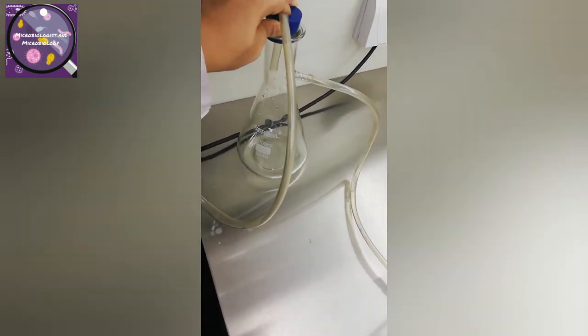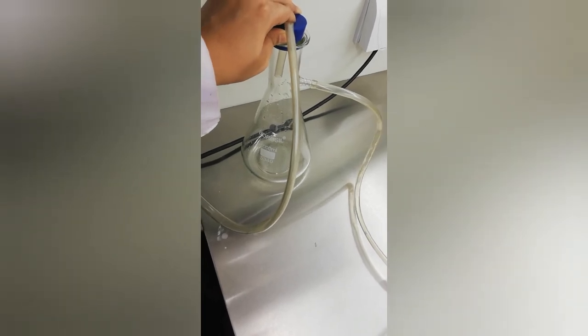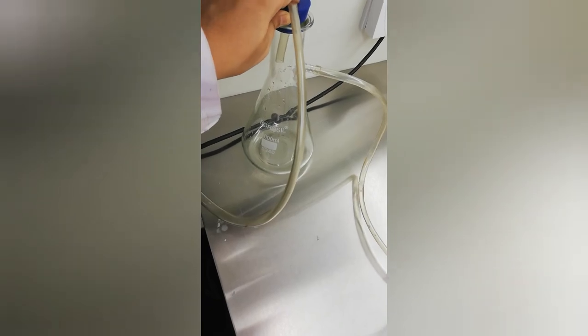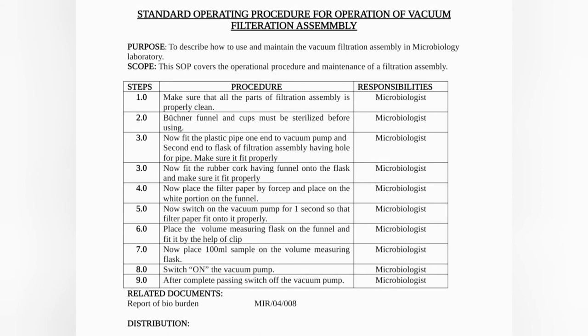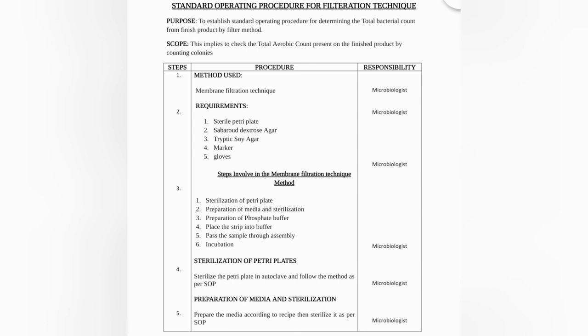I faced some problems with the assembly but I addressed and solved them, and now I am doing my testing methods with this assembly. Here is my SOP — I would like to share it with you all because it is very useful. You can check the purpose and scope points and take a screenshot from this video. As a general member of Microbiologist in Microbiology, we allow you to use this SOP for your lab as a sample; you can also alter or change the words. The second SOP is for the filtration technique, whose purpose is to establish a standard operating procedure for determining the total bacterial count from a finished product by the filter method. This SOP can be prepared for the filter method, bio burden, or MLD testing.